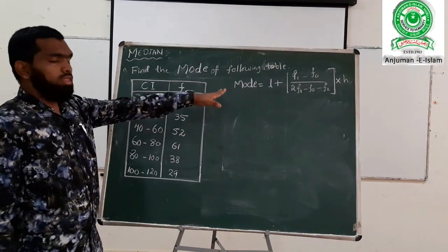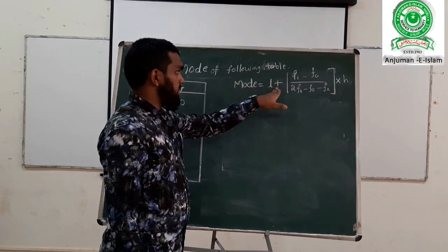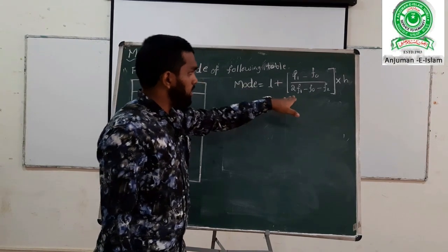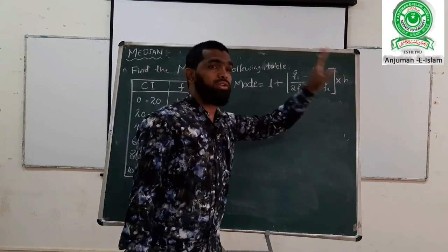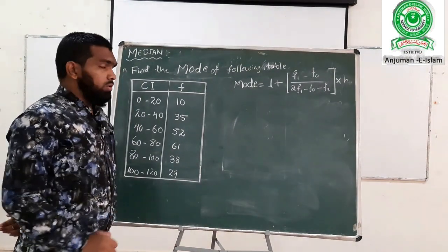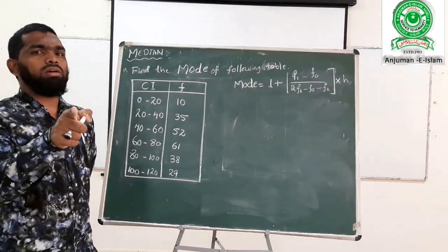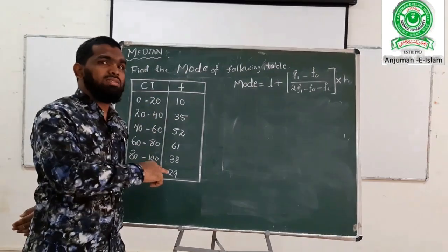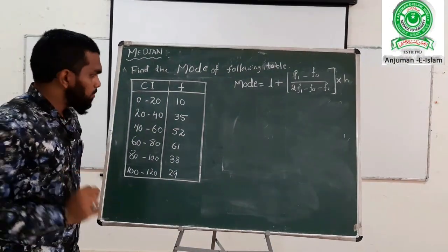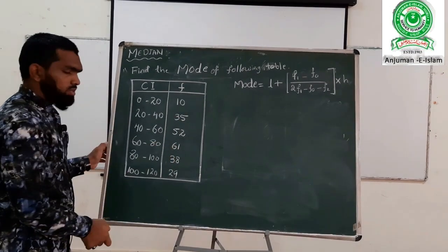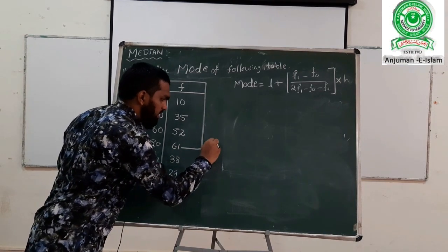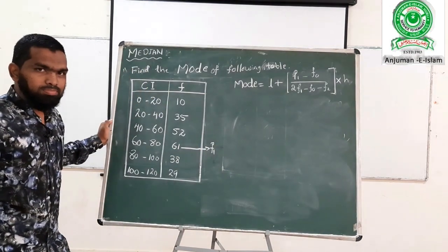The formula for mode is: Mode = L + (F1 − F0) / (2F1 − F0 − F2) × H. Here, F1 is the frequency of the modal class, F0 is the frequency of the class before it, and F2 is the frequency of the class after it.